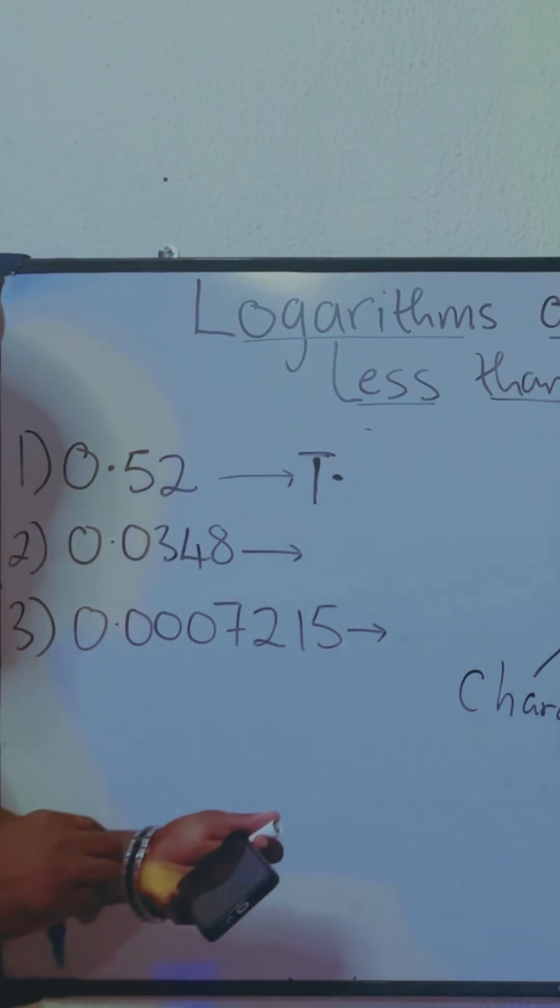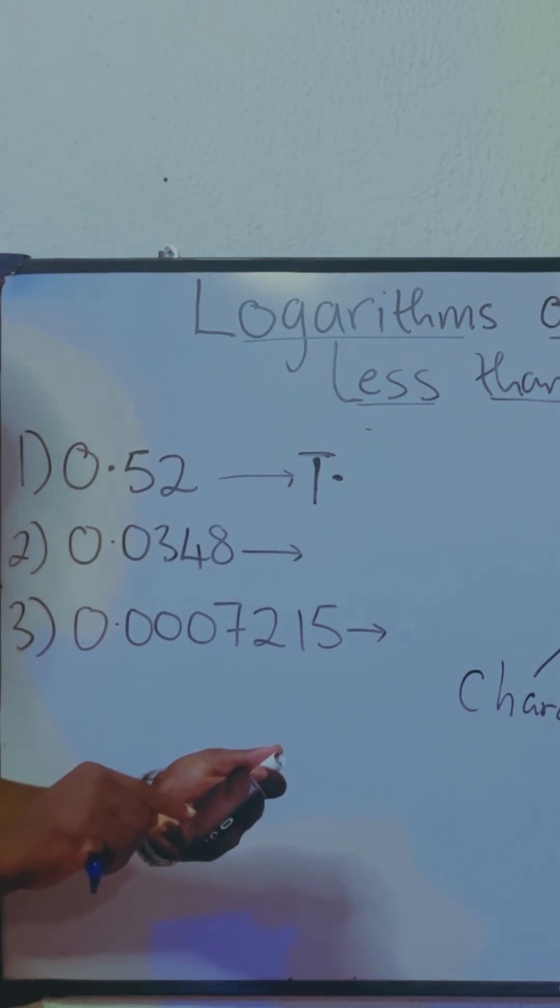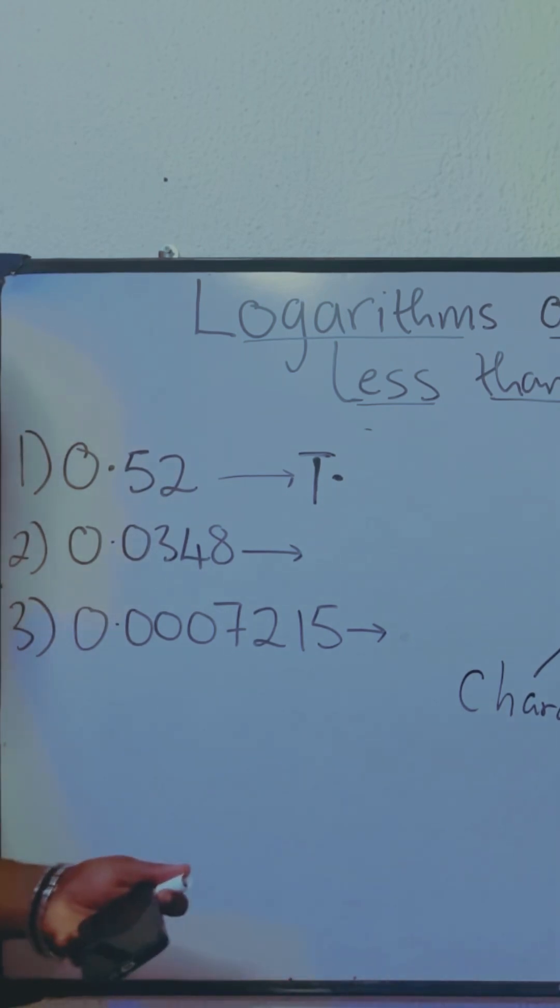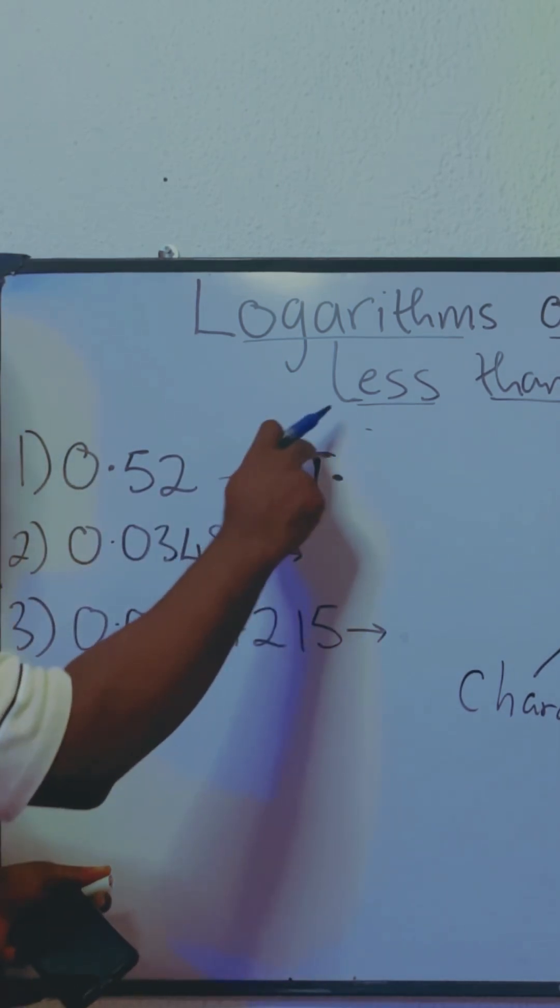So if we take our calculators now and we say log 5.2, what you're going to get is 0.71600. But we don't need to write zero again.